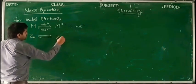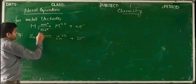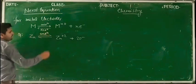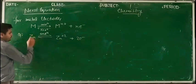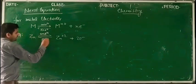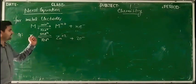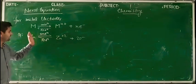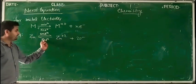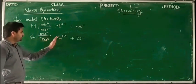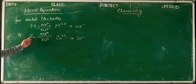In the reverse process, M^(n+) accepts n electrons and forms metal M. The reverse process is reduction. So the forward reaction is oxidation and the reverse reaction is reduction.